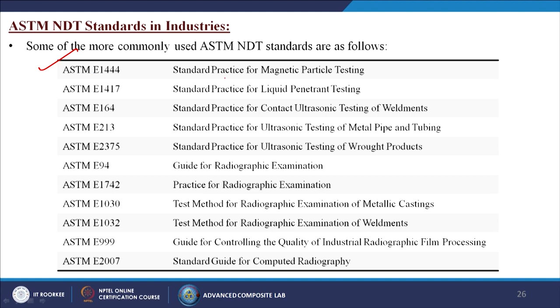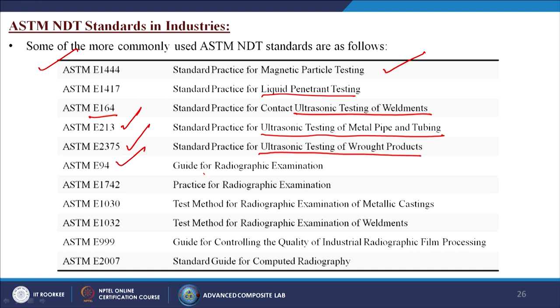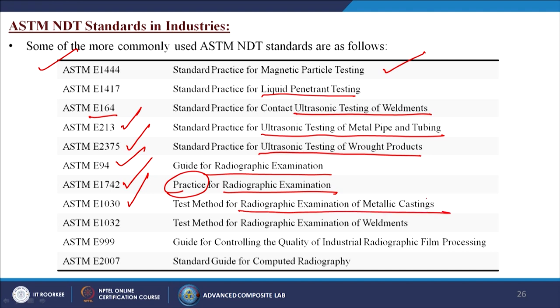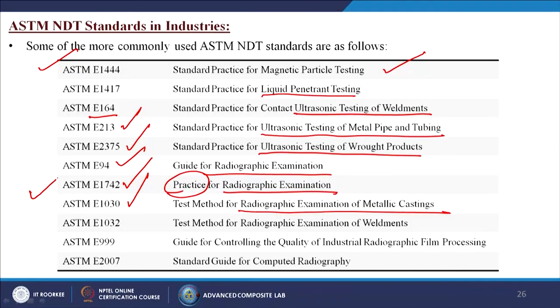Examples of ASTM standards include: E1444 — standard practice for magnetic particle testing; E1417 — standard practice for liquid penetrant testing; E164 — ultrasonic testing of weldments; E213 — ultrasonic testing of metal pipe and tubing; E2375 — ultrasonic testing of rod products; E94 — radiographic examination; E1742 — practice for radiographic examinations; and E1030 — test method for radiographic examination of metallic castings. First we have to search the relevant standard, read it out, and follow its instructions on how to perform the particular test.